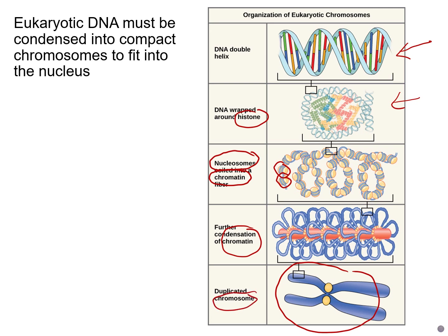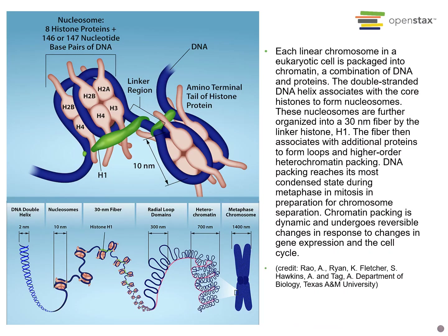In this duplicated chromosome, one copy is on one side and its identical copy is attached on the other side — that's one chromosome. After duplication, you'll see a chromosome with an identical copy of itself attached at the center. You don't have to memorize all the different types of histone proteins — just know that we have eight histone proteins and DNA is wrapped around those eight histone proteins to create this bead-like structure called a nucleosome.